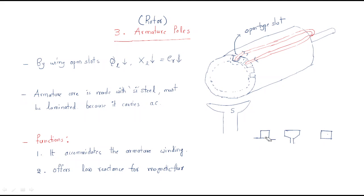If the slot is fully closed, it is called a closed type slot. We are preferring the open type slot in DC machines. So observe here: this is one slot and this is another slot; they are continuous. I am taking only three slots as reference. This complete part is the armature — this is a side view — and these are the slots with the winding, shaft, and one pole shown.